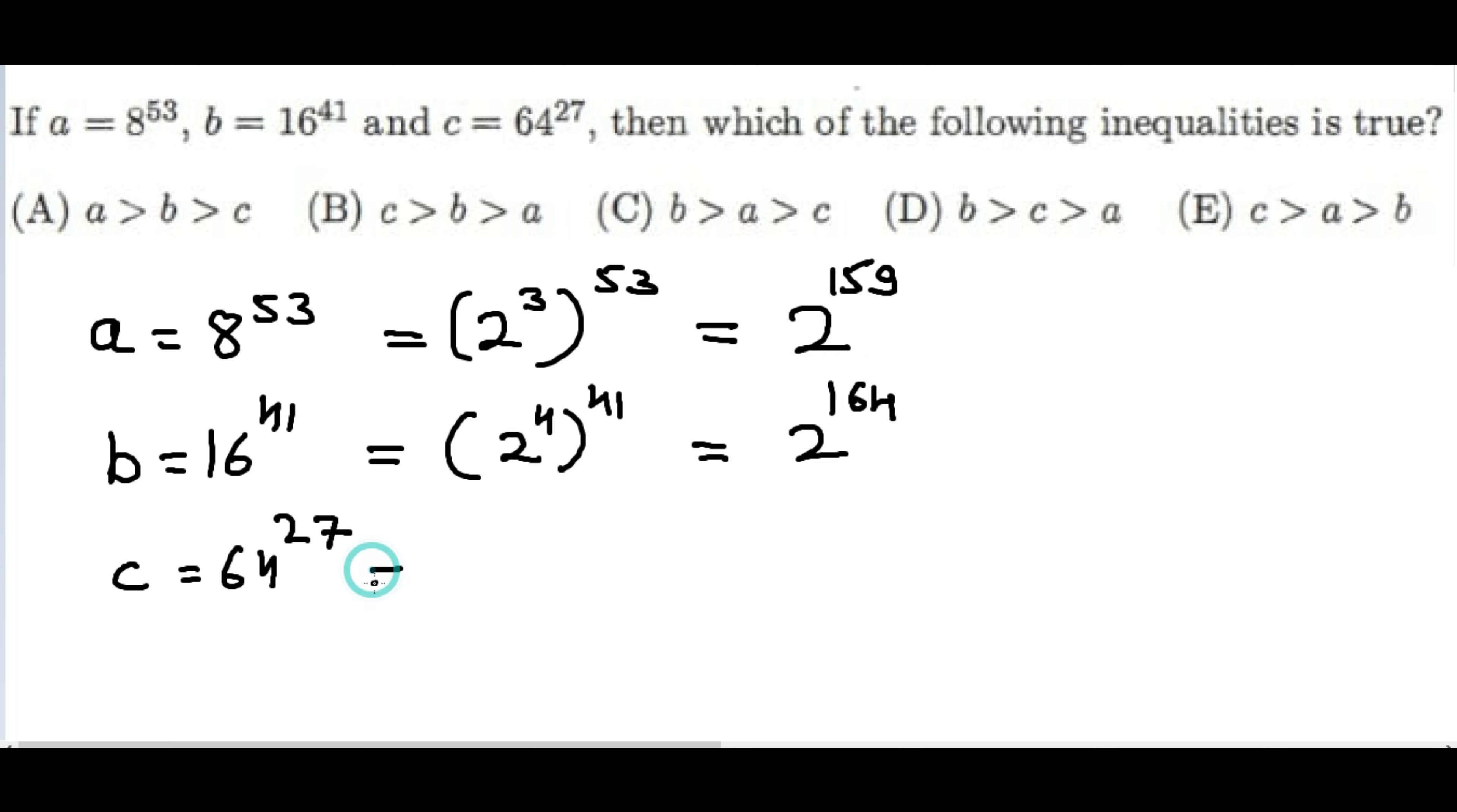Now let's talk about c. 64 is 2 to the power 6, so it's 2 to the power 6 to the exponent 27. If you multiply that, 6 times 7 is 42, carry the 2, 4 on top, 6 times 2 is 12, 12 and 4 is 16, so we get 2 to the power 162.